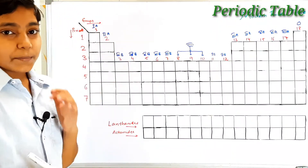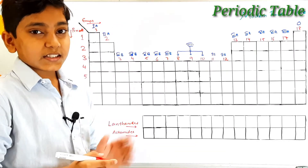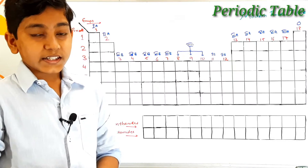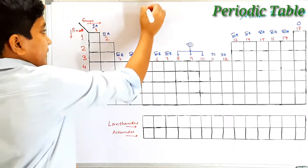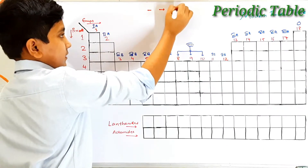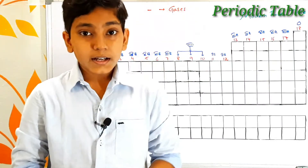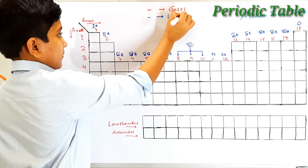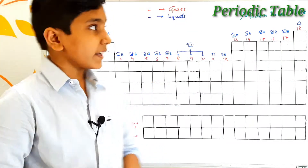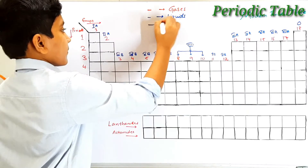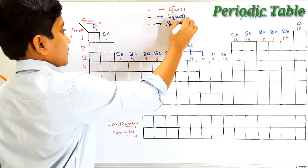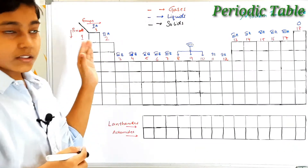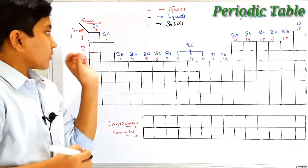Now let us discuss about the elements found in the modern periodic table. Elements written in red color in this table are gases, elements written in blue color are liquids, and elements written in black color are solids. Now let us begin with the first 1A group elements.